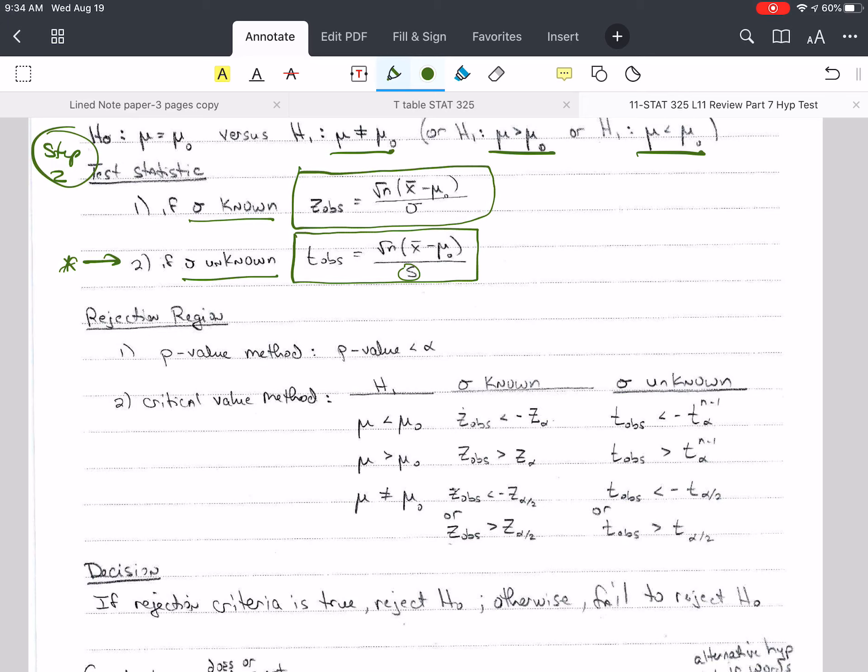There's the p-value method, and with the p-value, we calculate the probability of our test statistic occurring under the null hypothesis. So one way that we write this is the probability, and we'll put H-naught down here to say that it's under H-naught.